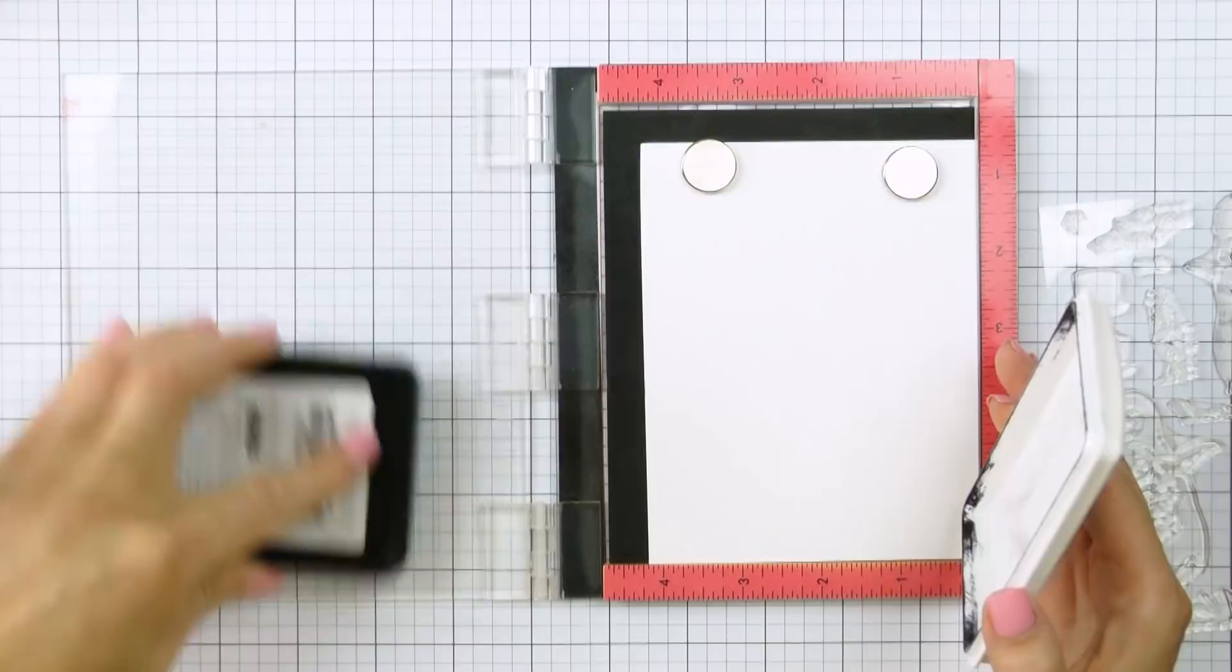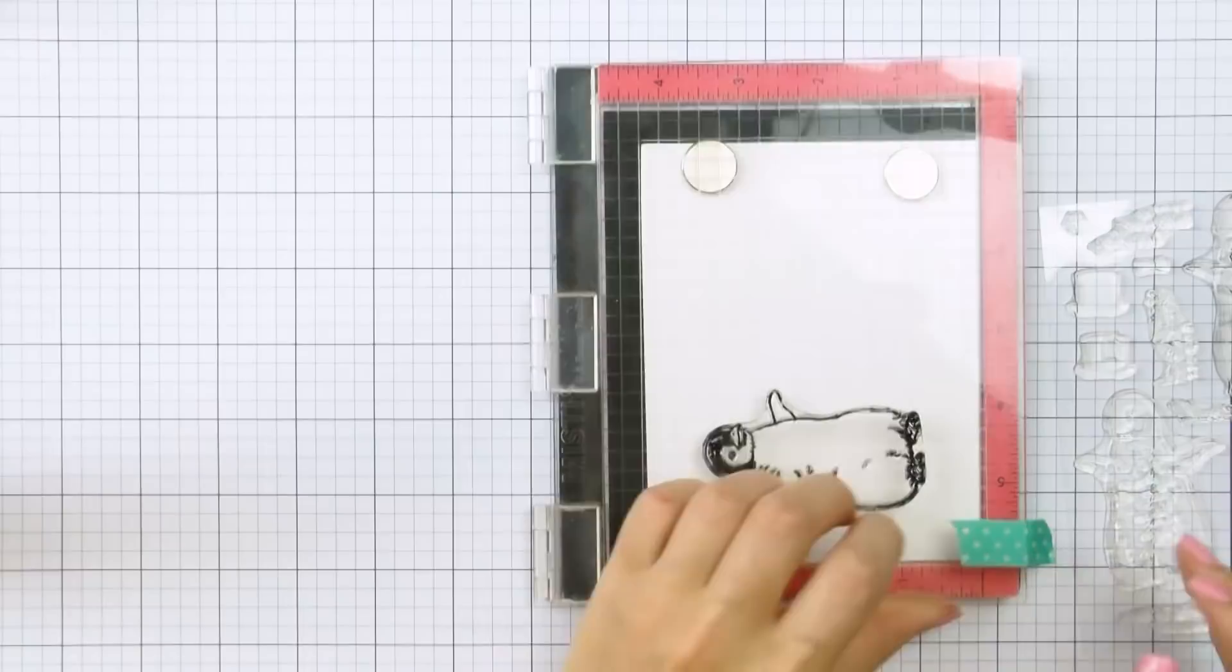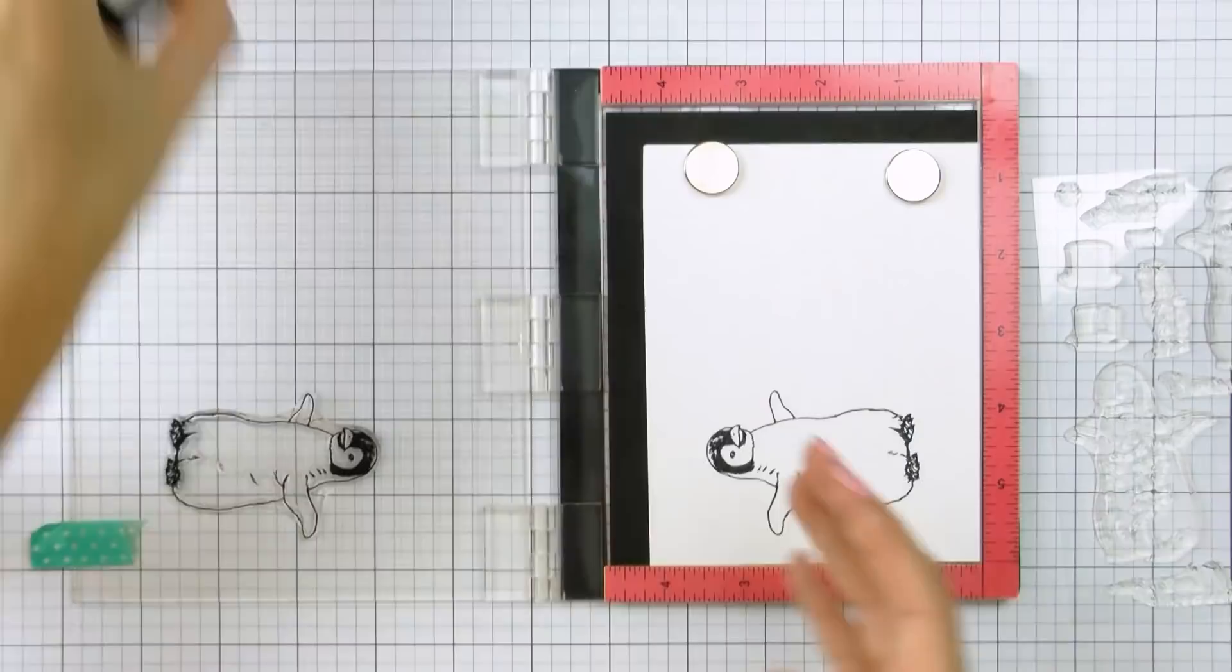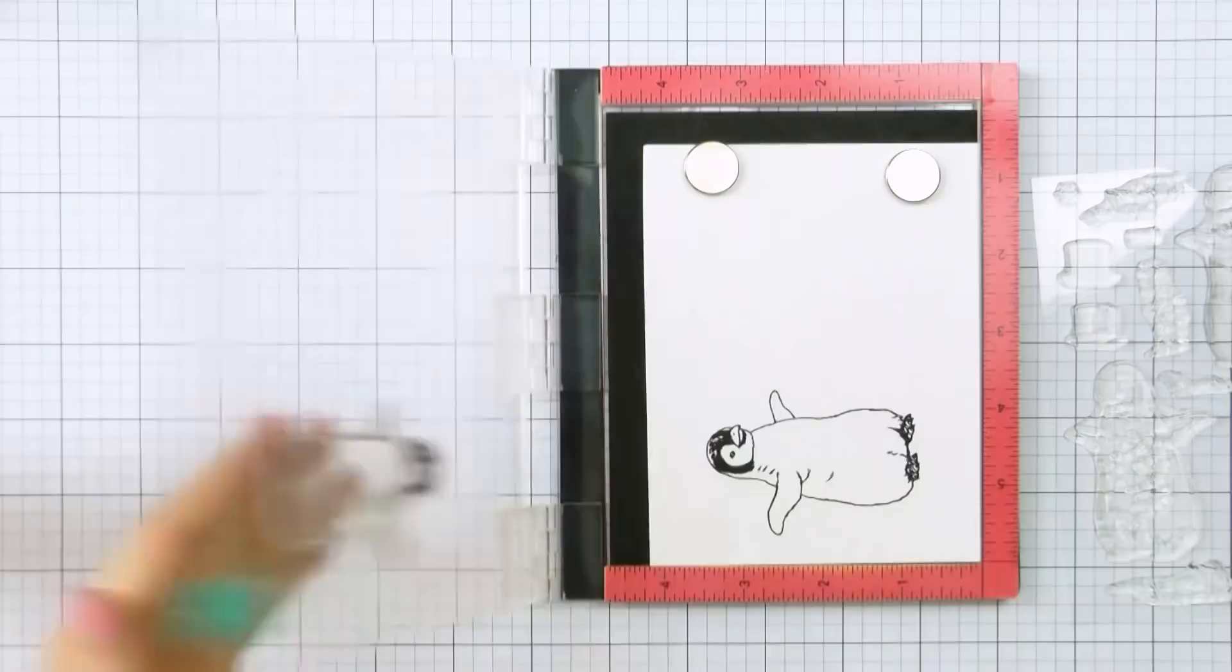Depending on the stamp set, the design of the image, the number of layers and also on the kind of ink you are using, it's sometimes best to stamp the outline layer first or last. I will show you both ideas today and will explain when it is best to stamp the outline layer first and when last.